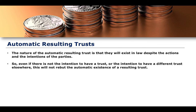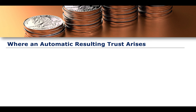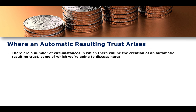Even if there is no intention for a trust to exist, even if the parties don't want there to be a trust or intend a different trust, this will not rebuke the automatic resulting trust — its automatic existence if the law and equity so require it. This then begs the question: where does an automatic resulting trust arise, and in what circumstances? A first circumstance is where there might not be a certainty of objects.